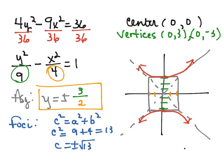So c is going to be plus or minus the square root of 13. So to get to your foci, you start at your center and go toward your vertices. So the square root of 13 is approximately equal to 3.6. So we're going to go up 3.6, and there's where our focus would be, and down 3.6, and there's where our other focus would be.